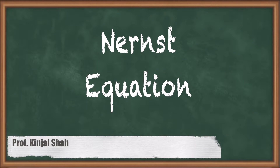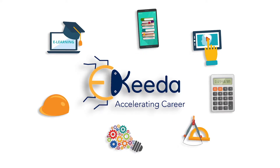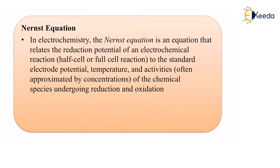Hello students. In today's session we are going to talk about the Nernst Equation. In electrochemistry, the Nernst Equation is an equation that relates the reduction potential of an electrochemical reaction, half cell or full cell reaction to the standard electrode potential, temperature and activities — often approximated by concentrations — of the chemical species undergoing reduction and oxidation.